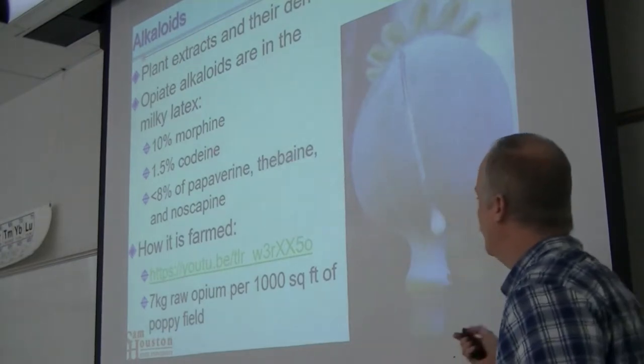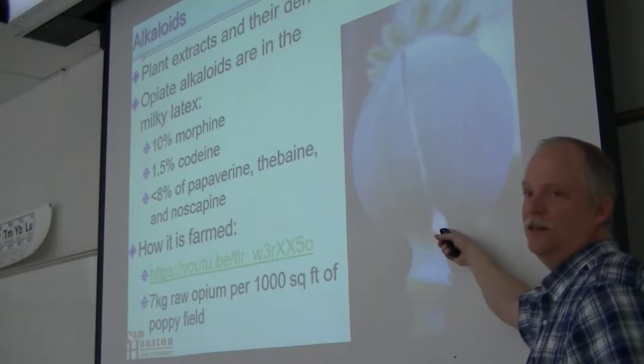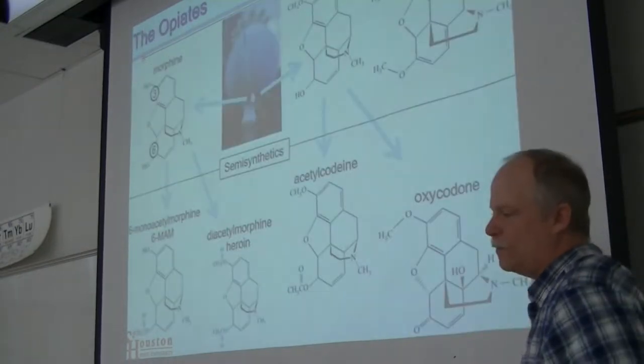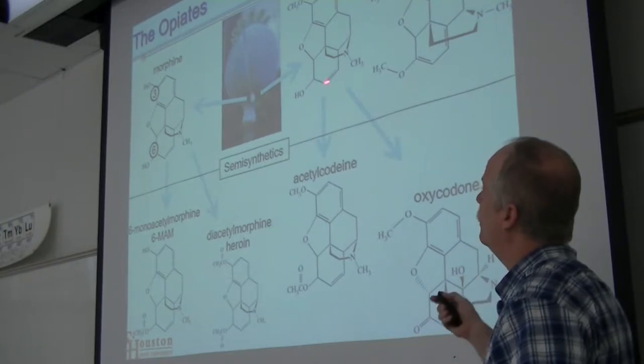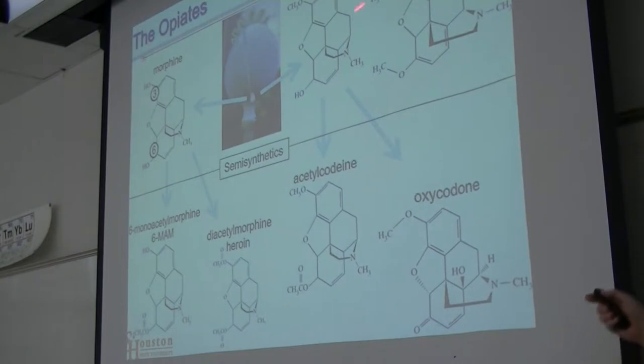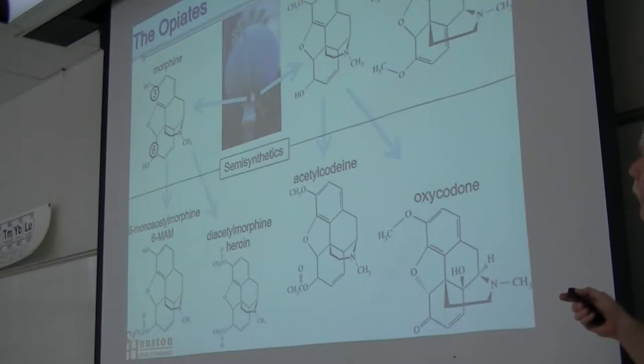That milky latex is pretty potent - ten percent morphine in this substance. You dry it out, the concentration just goes up. These opiates - that ten percent is morphine. There's a couple of other things in the latex: codeine and thebaine. Look at the chemical differences - they have the same fused ring structure, but it's really positions three and six.